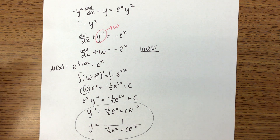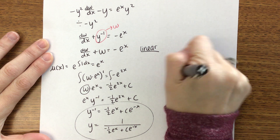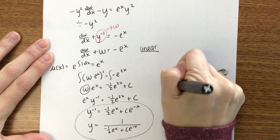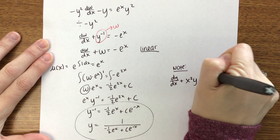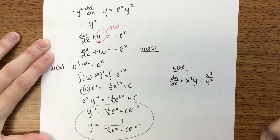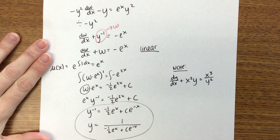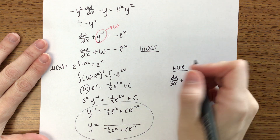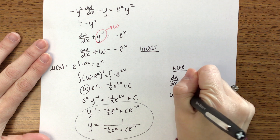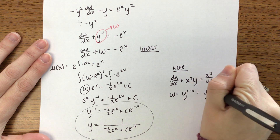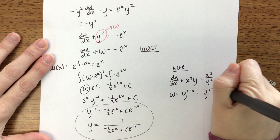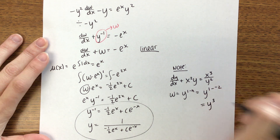One quick note before we look at the third kind: be careful if you have something like dy/dx plus x squared y equals x cubed over y squared. This is Bernoulli because of that y-squared term. So w equals y to the (1 minus n), which in this case is y to the (1 minus negative 2) — please make sure that you use negative 2, not positive 2.